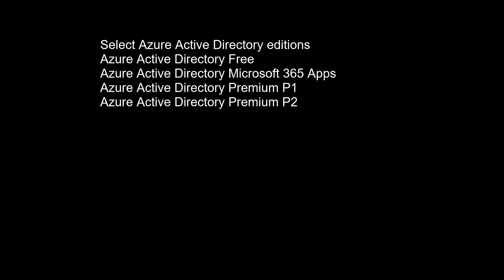Azure Active Directory Premium P1: in addition to the free features, the Premium P1 edition lets hybrid users access both on-premises and cloud resources. This edition supports advanced administration like dynamic groups, self-service group management, and cloud write-back capabilities. P1 also includes Microsoft Identity Manager, an on-premises identity and access management suite, and allows self-service password reset for on-premises users. Azure Active Directory Premium P2: in addition to the free and P1 features, Premium P2 offers Azure Active Directory Identity Protection for risk-based conditional access. Privileged Identity Management is included to help discover, restrict, and monitor administrators and their access to resources, and to provide just-in-time access when needed.